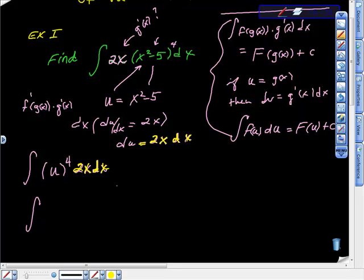All the rest of this function is in terms of U, but not this part. But now I'm going to say du is that. So now the whole function is in terms of U. If you look at it, we have U to the fourth times du.